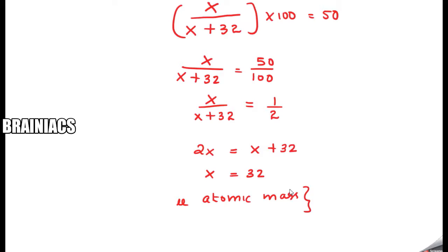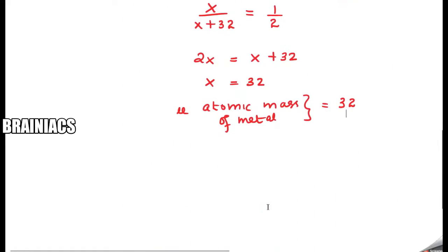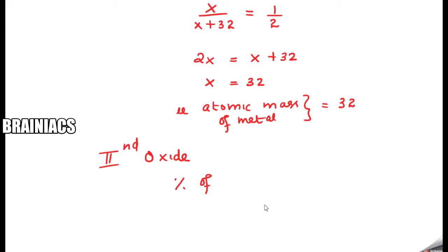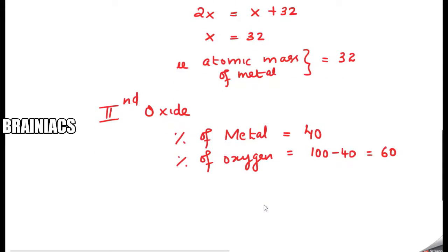Now we will talk about the second oxide. For the second oxide, the percentage of metal is 40%. So the percentage of oxygen is 100 minus 40 = 60%. The meaning of this is: 40 grams of metal and 60 grams of oxygen are present in 100 grams of the metal oxide.